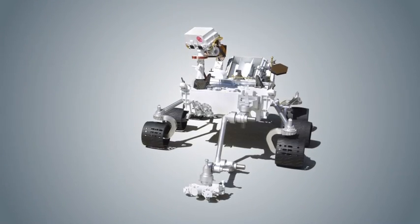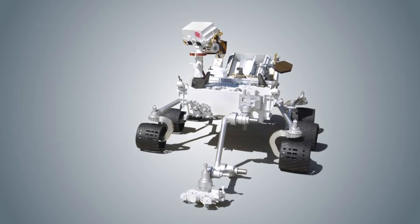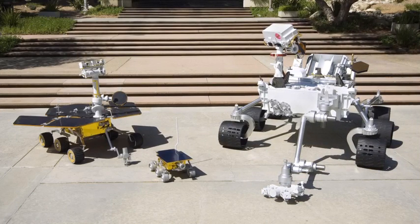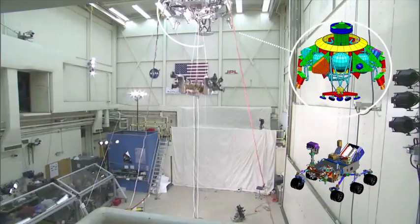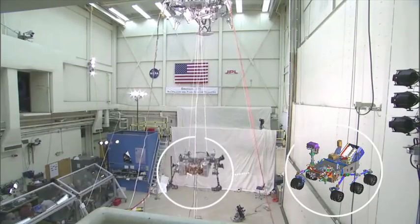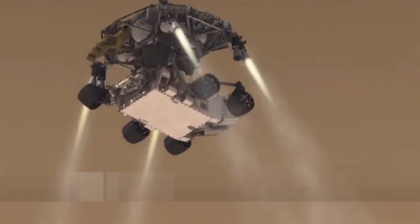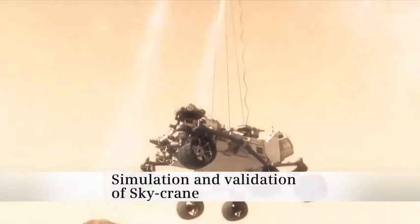Curiosity's total mass is five times larger than the mass of the largest rovers previously sent to Mars. Innovative maneuvers and technology to land a heavier spacecraft with greater precision were also developed and proven using Siemens software. And Curiosity made a perfect landing in August of 2012.